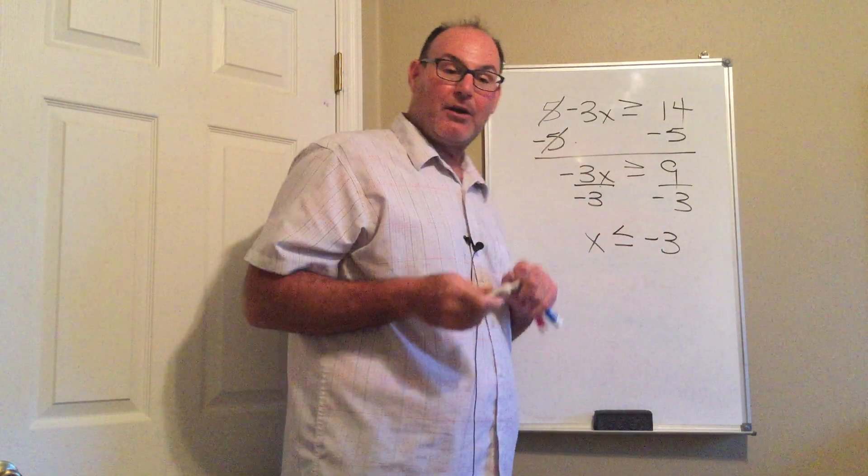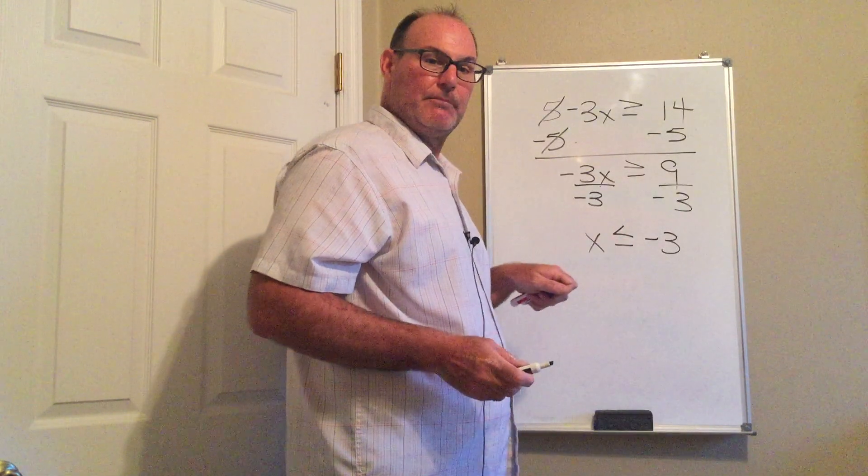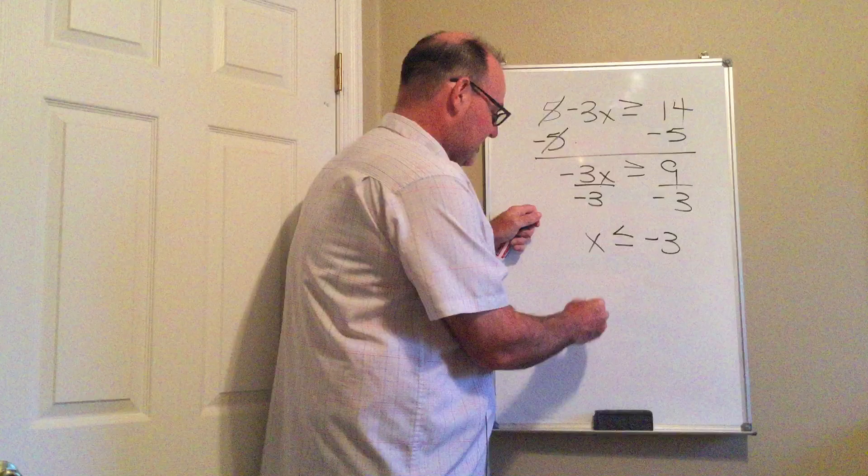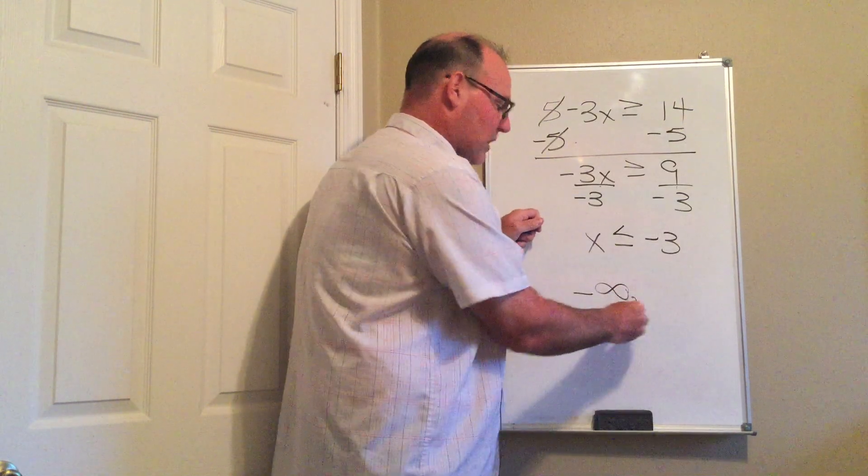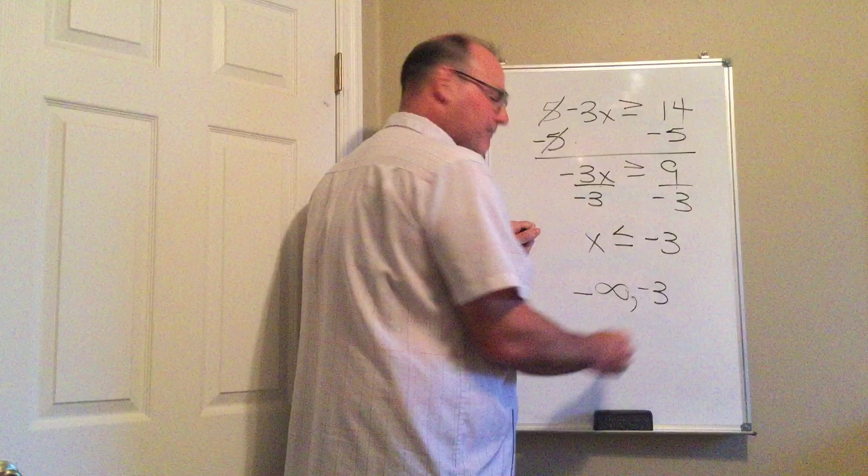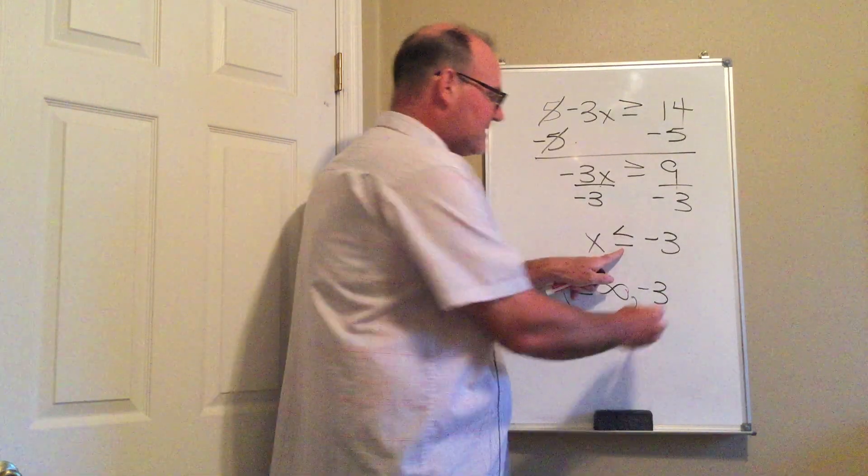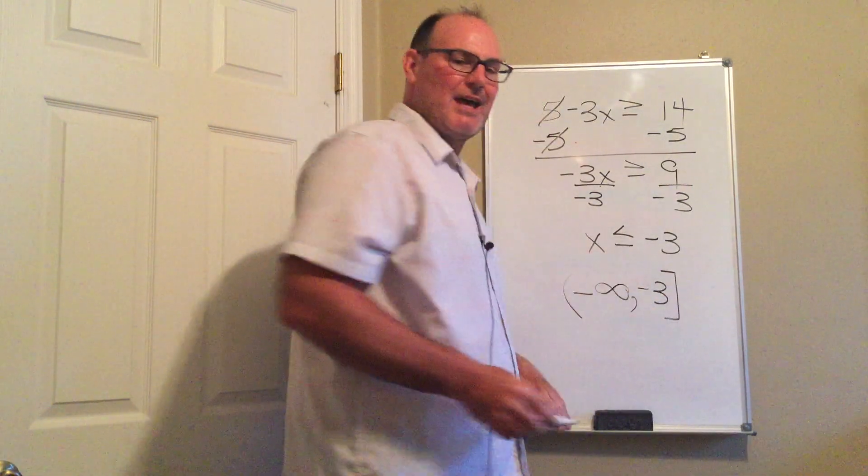Now we're gonna write our answer in interval notation. All of my values are less than or equal to negative 3. So that means my lower bound of this interval is negative infinity because all the values are less than. The upper bound is negative 3. We always put a parenthesis at the infinity end, and because of this equals, we put a bracket at the negative 3.